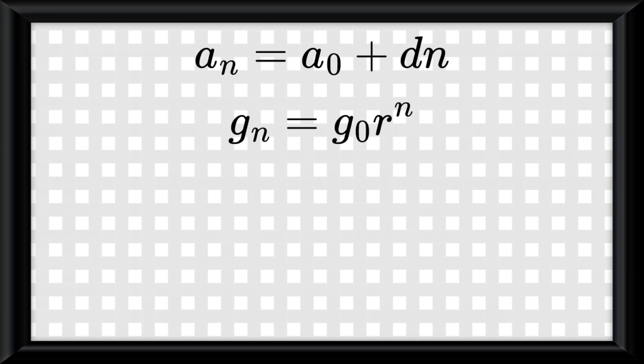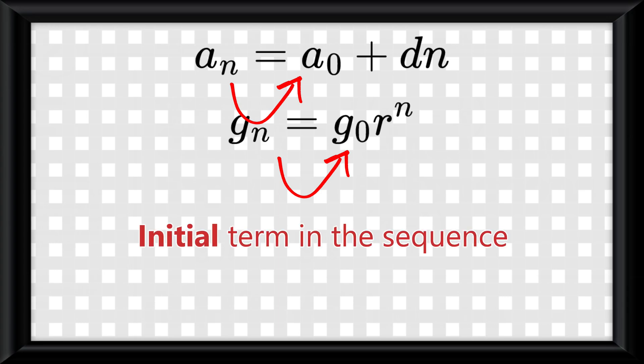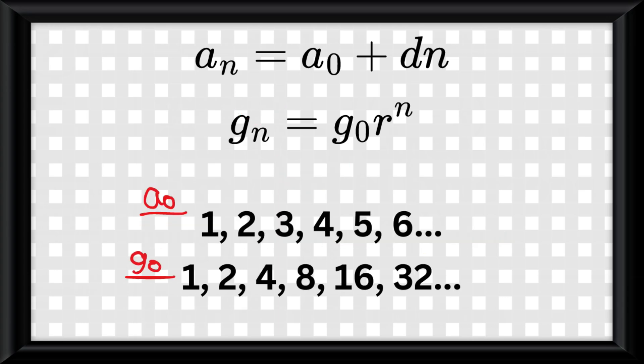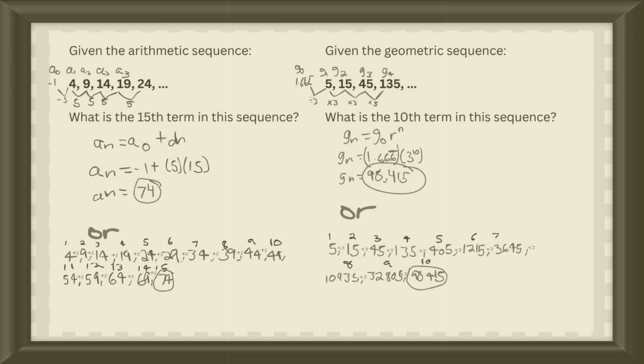I said last video that the zero term was the first term of the sequence. What would have been more appropriate would have been to say that it is the initial term, because it's technically the term before the first term. If you're still confused, reference the answers to the questions at the end of my last video and they will clarify it.